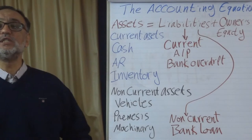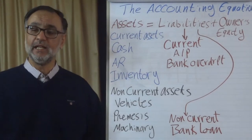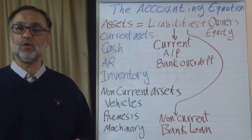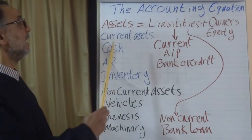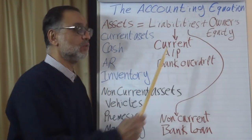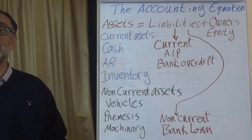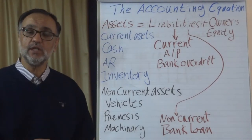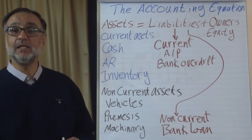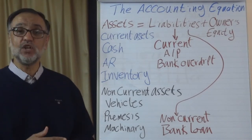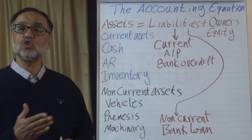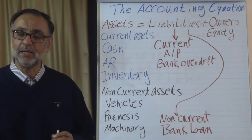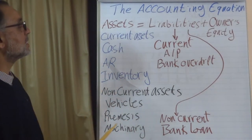Now we discuss the accounting equation, which is very fundamental in accounting. The accounting equation is the base on which everything is built: Assets = Liabilities + Owner's Equity. Assets is everything that the business owns — cash, inventory, buildings, cars, machinery, furniture — everything owned by the business that is not an expense.